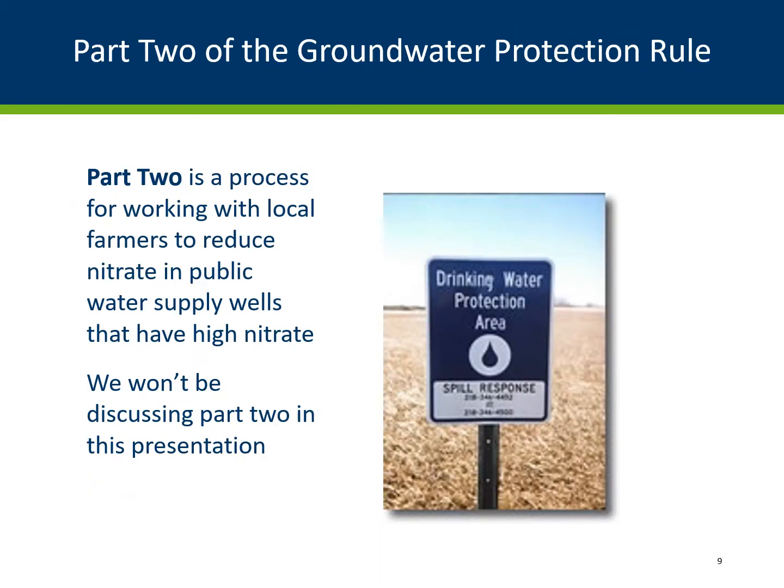Part 2 of the Groundwater Protection Rule is a process for working with local farmers to reduce nitrate in public water supply wells that have high nitrate. We won't be discussing Part 2 in this presentation.